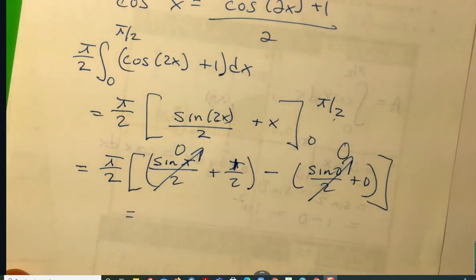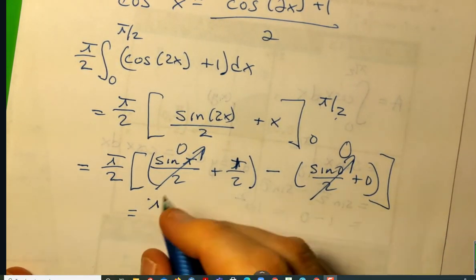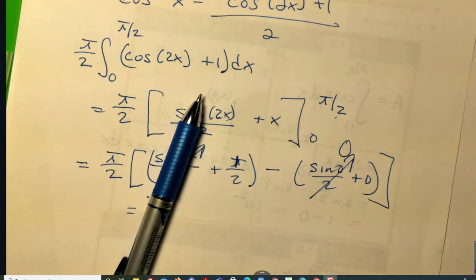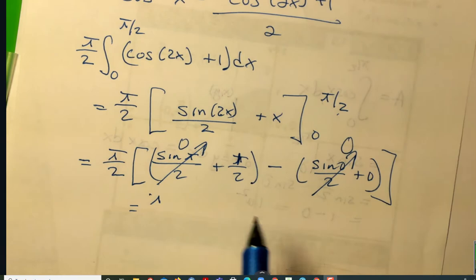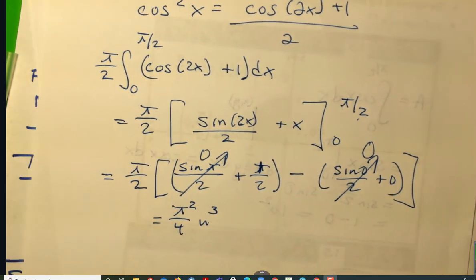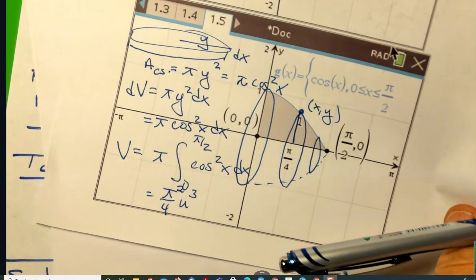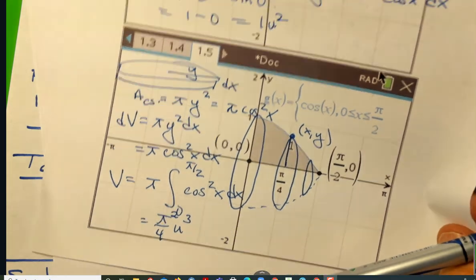Wait. Wait, wait, wait, wait. Let me check something. Pi times pi is pi squared over 4 cubic units. Oops. So I forgot to square that. So it's pi squared over 4 cubic units.